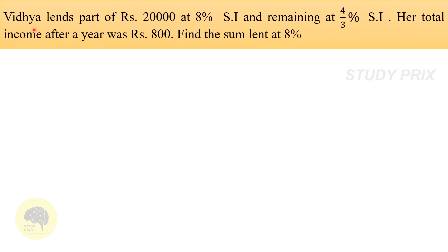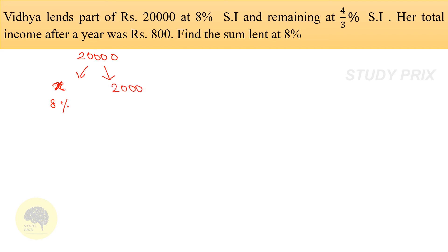Coming to the last problem: Vidya lends part of Rs.20,000 at 8% simple interest and the remaining at 4/3% simple interest. Their total income after a year was Rs.800. Find the sum lent at 8%. The total amount is 20,000, divided into two parts. The first part is taken as X at 8% rate, and the second part is 20,000 − X at 4/3%. The sum of these two simple interests gives Rs.800.